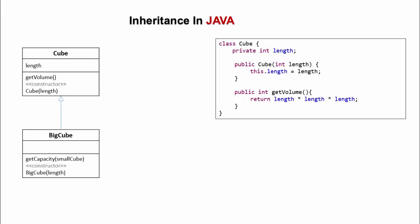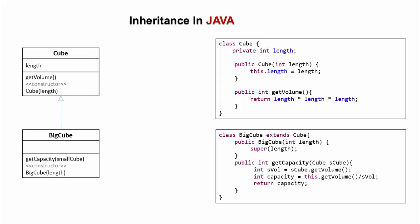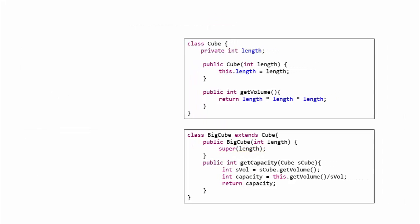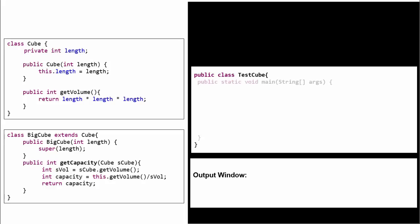Now, while implementing inheritance in Java, the child class needs to use extends keyword to declare its parent class. The constructor of child gives call to parent class constructor by using super keyword. Let us test this implementation.